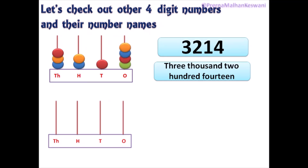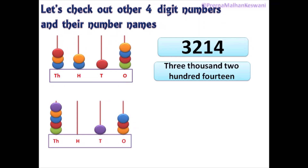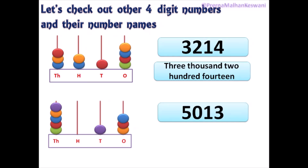Now, let's move to the next number. Children, try to guess this number. I have shown you the abacus with the beads: there are 3 beads in the 1s place, 1 bead in the 10s place, 0 beads in the 100s place, and 5 beads in the 1000s place. So what will be the number? Yes, the number will be 5,013. How to give a name to this number? Five thousand because there is 5 in the 1000s place. 0 is in the 100s place, so we will not mention hundreds here. And thirteen. So five thousand and thirteen is the name of this number.